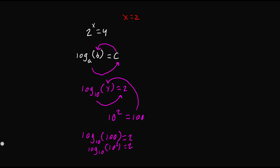The property of log tells us that when we have an exponent inside the parentheses, we move it to the front of the log. So we have 2 times log base 10 of 10. Since we have the same base and the same value, that equals 1, so we see that 2 times 1 is equal to 2, which does indeed give us 2.